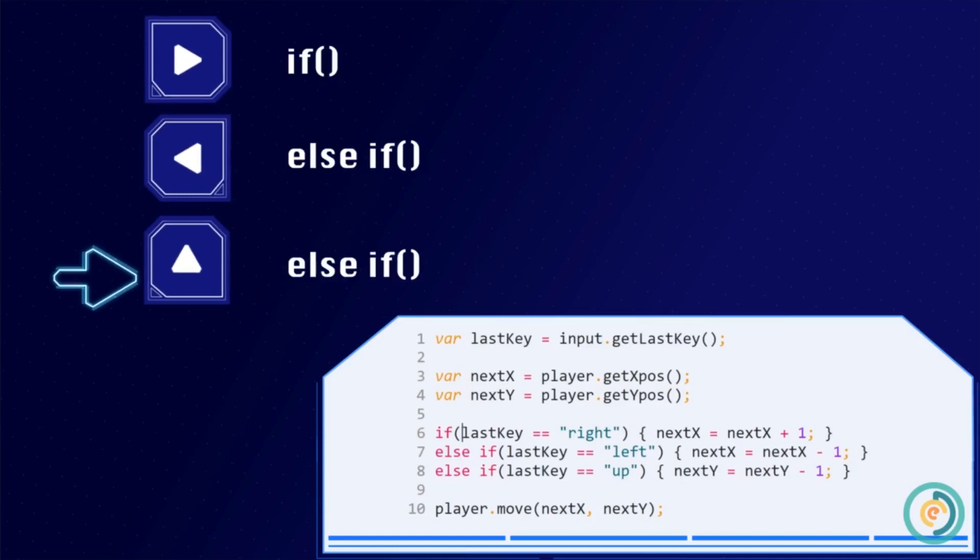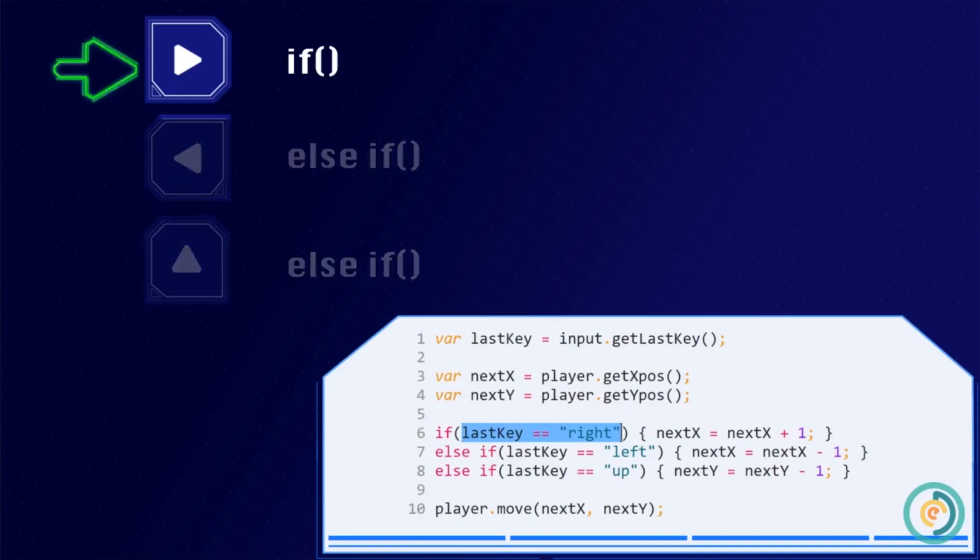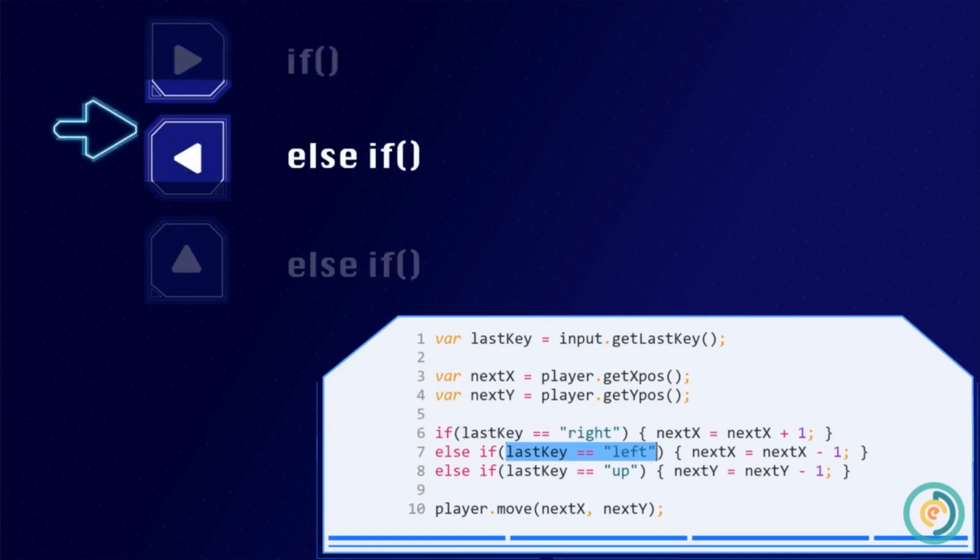The program will start by checking the condition of the if statement. If this condition is true, the program won't have to check the two else if statements. If it's false, we'll check the condition of the first else if statement. The condition of the second else if statement will only be checked if the first two conditions are false.